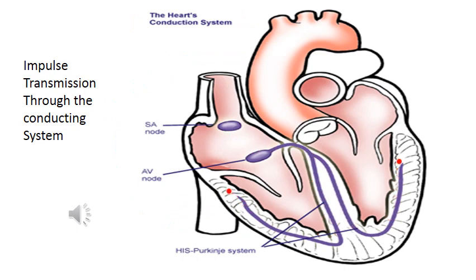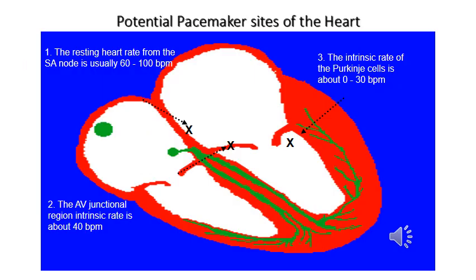This slide demonstrates how the impulse is generated and transmitted. The SA node has the highest rate of discharge of impulses, and this is why impulses from the SA node depolarize the AV node and the Purkinje cells before they discharge their own impulses. This is why the SA node is regarded as the pacemaker of the heart.